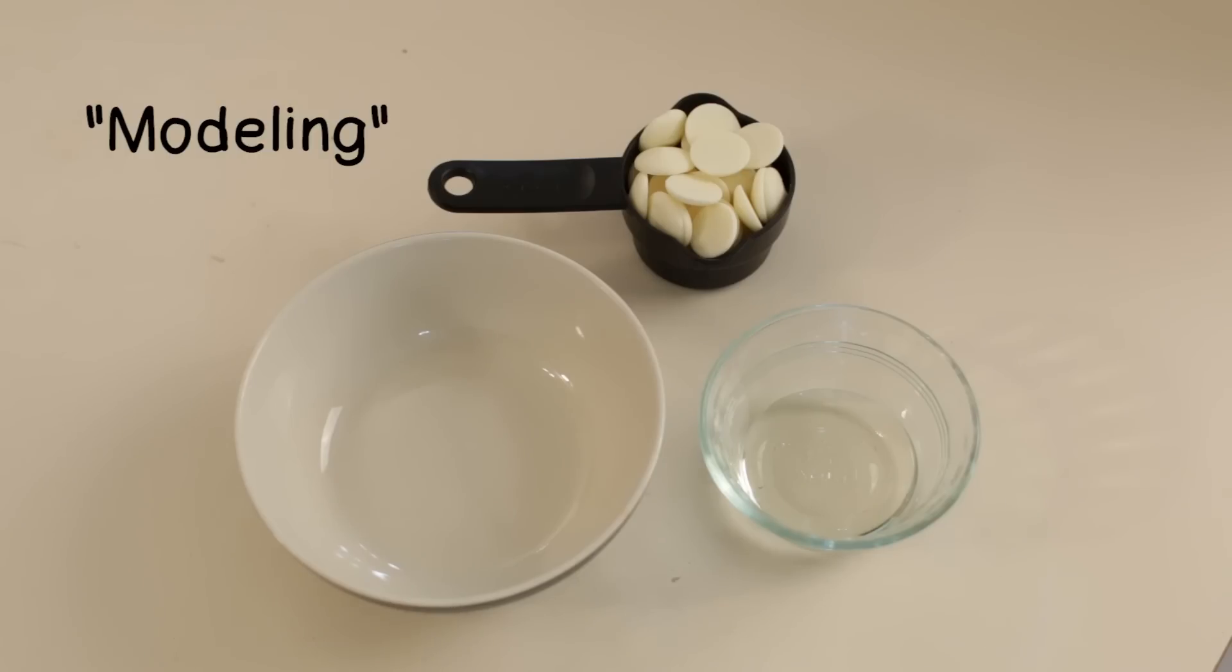To make molding chocolate it is pretty simple. We just need two ingredients: we need chocolate and we need corn syrup. The ratio that I have here is a half a cup of chocolate to two tablespoons of corn syrup. On a larger scale it is about two cups of chocolate for a half a cup of corn syrup, and you can scale it up depending on how much molding chocolate you want to make.